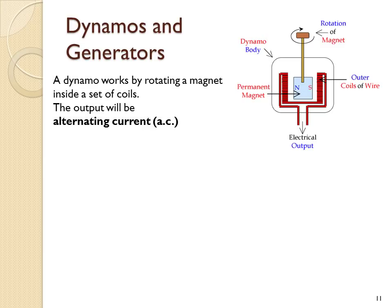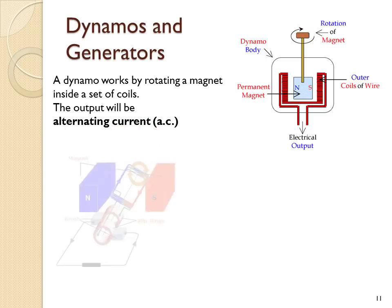A dynamo is a rotating magnet inside a set of coils. As the magnet rotates relative to the coil, the magnetic field through the coil will change, and when it does so, it induces a voltage across the coil. As it keeps changing, the output voltage will be positive and then negative, so we get an alternating voltage and therefore an alternating current output.